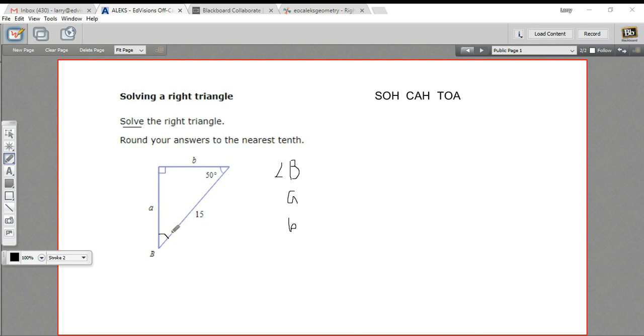The angle's not too tough to find. We already have two angles in this triangle, a 90-degree angle here, a 50-degree angle here. So 90 and 50 is 140. Subtract that from 180, and you get 40. So that is a 40-degree angle.